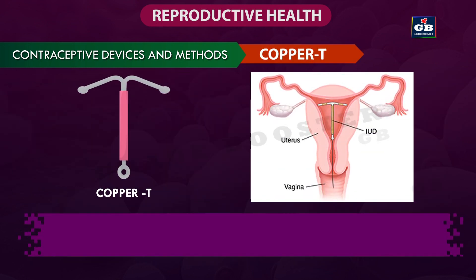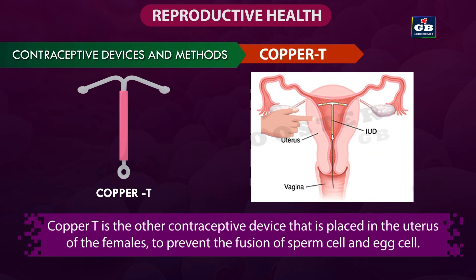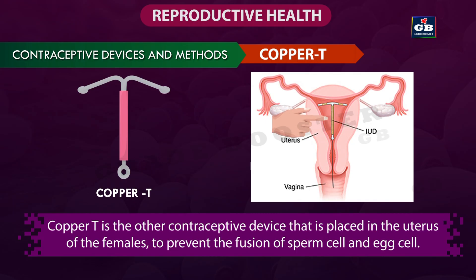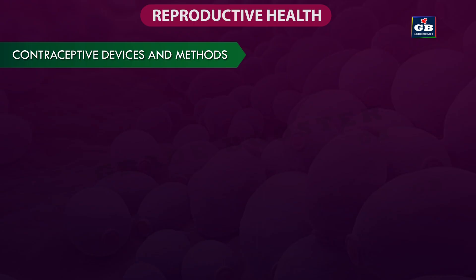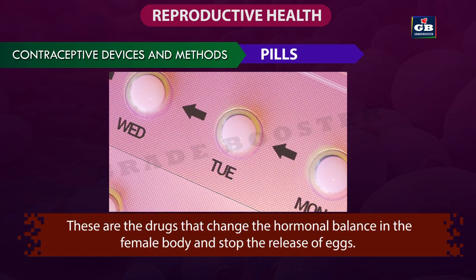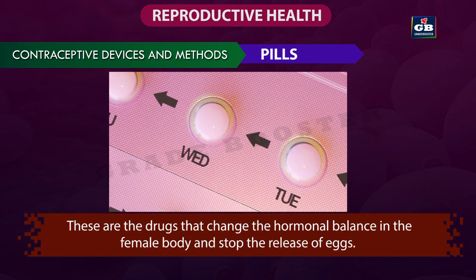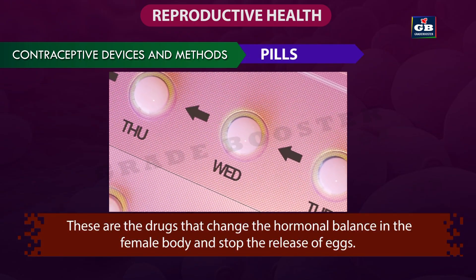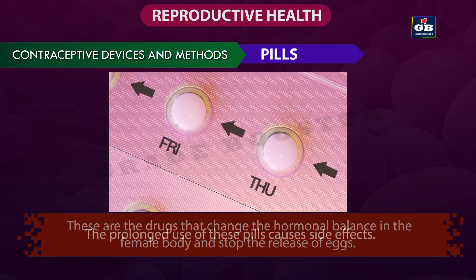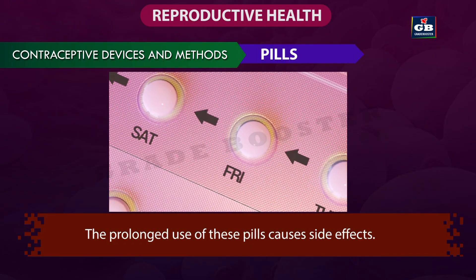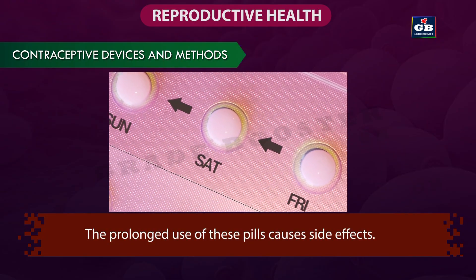Copper T is another contraceptive device that is placed in the uterus of females to prevent the fusion of sperm cell and egg cell. This device may cause irritation in some people. Contraceptive pills are drugs that change the hormonal balance in the female body and stop the release of eggs. The prolonged use of these pills can cause side effects.